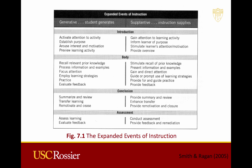This figure is a summary of the 15 events of instruction described by Smith and Reagan. Note that these events can either be more generative or supplantive. For example, in the first event, students can activate their own attention to the activity, or the instructor can gain the attention of the learners. When designing lessons, you do not need to stick to either generative or supplantive strategies for the entirety of the lesson. Each event can be placed at a different point along the continuum depending upon your learners, the task, or the context. On the next two slides, you will practice identifying whether an activity is more generative or supplantive.